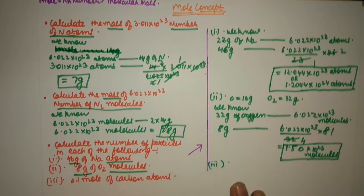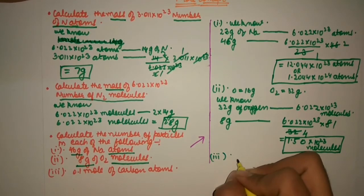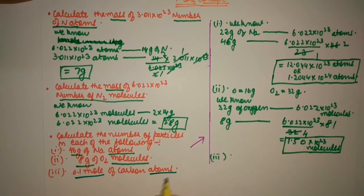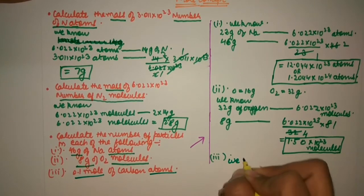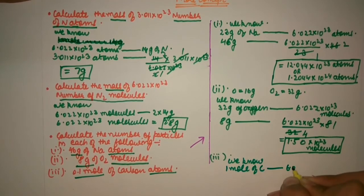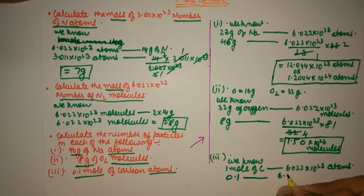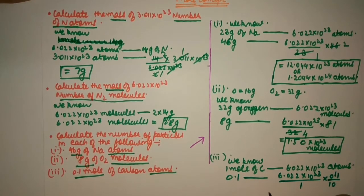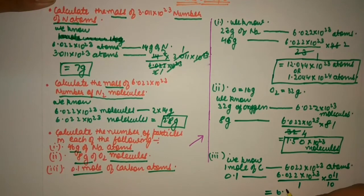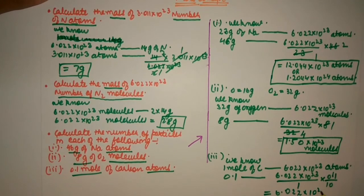The third part is 0.1 mole of carbon atoms. We know 1 mole of carbon has 6.022 into 10 to the power 23 Avogadro's number of atoms — carbon atom C. So in 0.1 mole: 6.022 into 10 to the power 23 upon 1 into 0.1 = 6.022 into 10 to the power 22 atoms. This is our final answer.